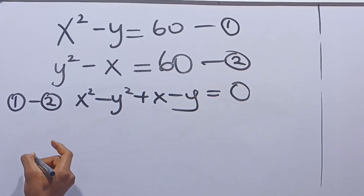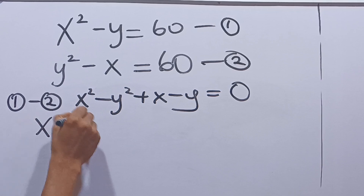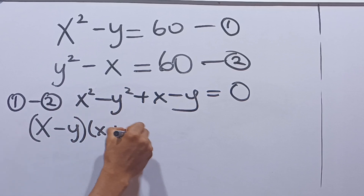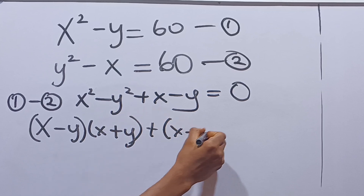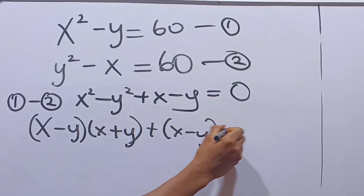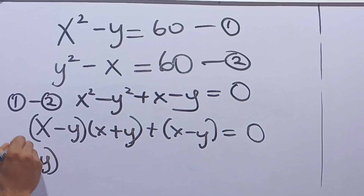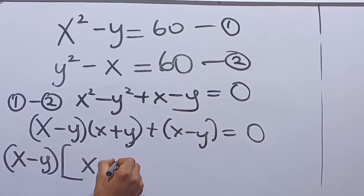From here, we can say, using the difference of two squares, that this becomes x minus y into x plus y. Grouping, this becomes plus x minus y is equal to 0. Let's factorize x minus y: we have x minus y into x plus y plus 1.